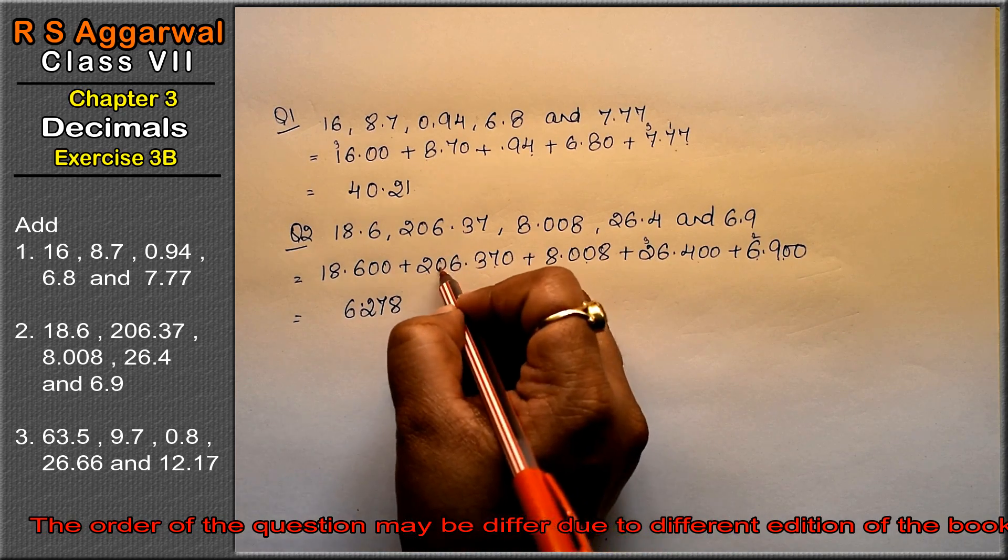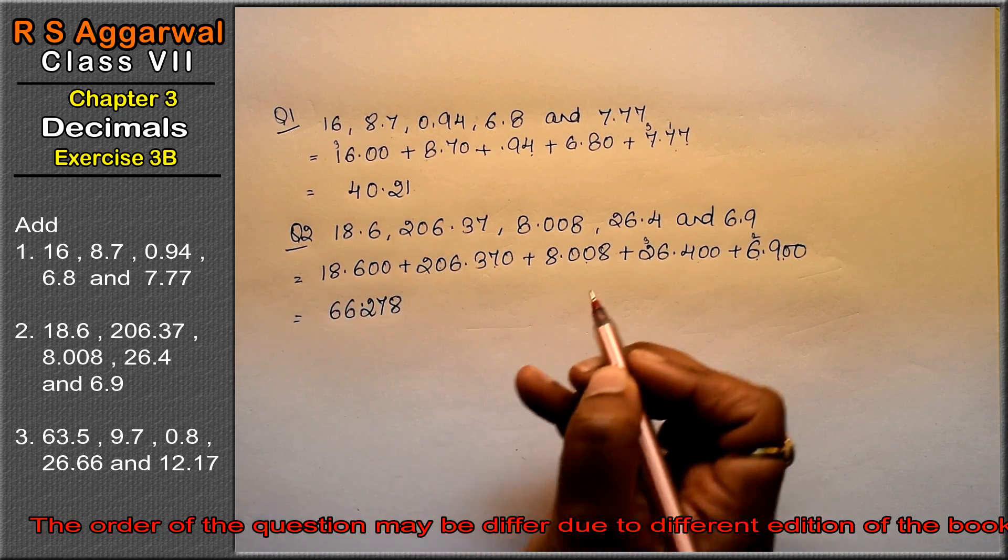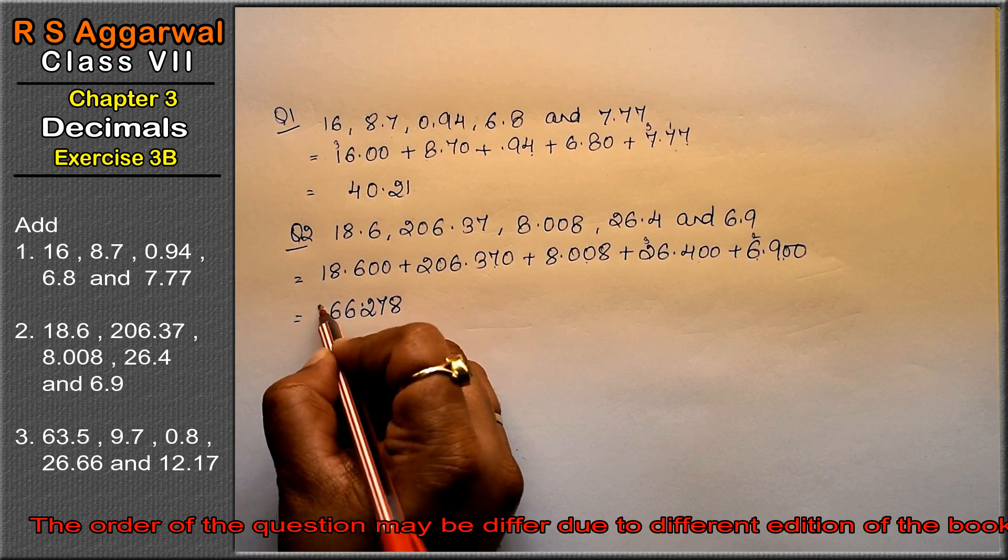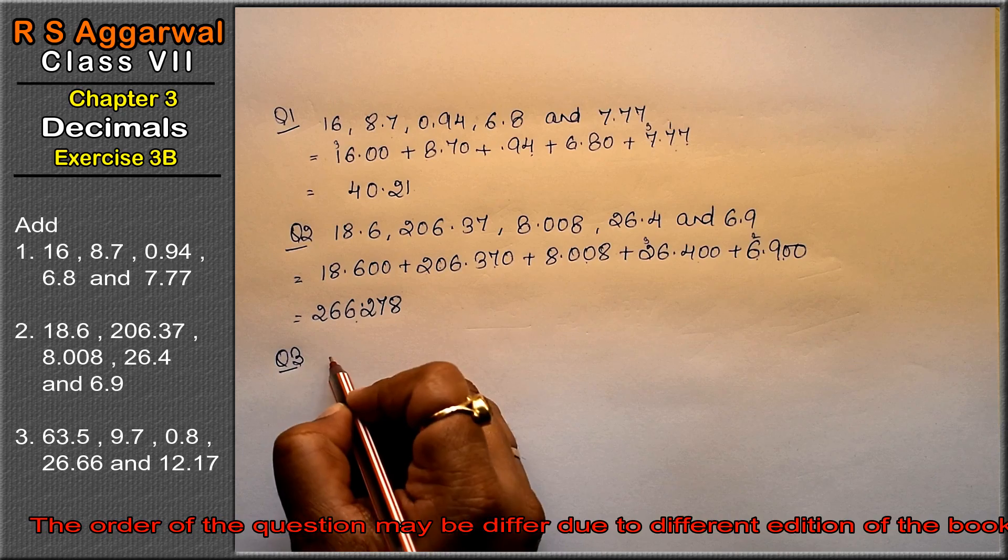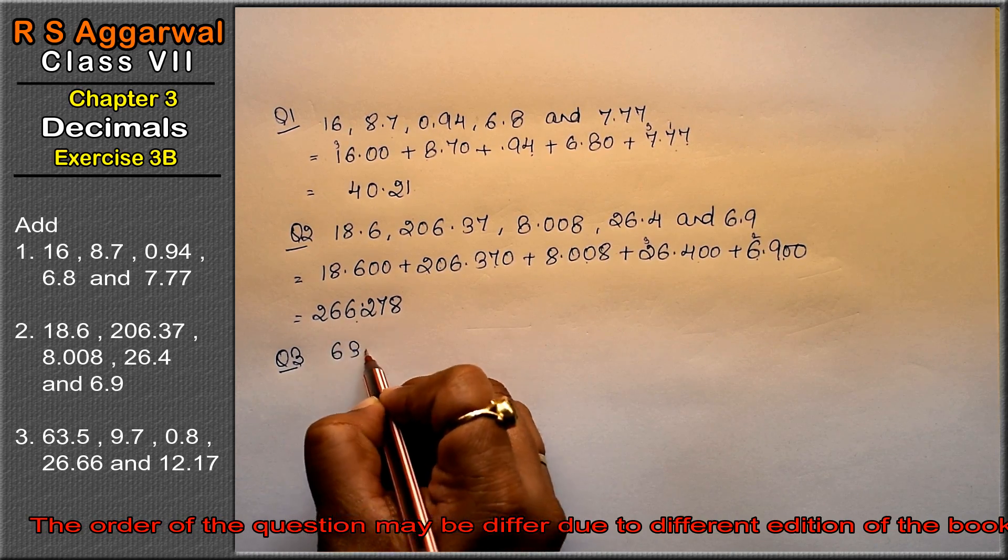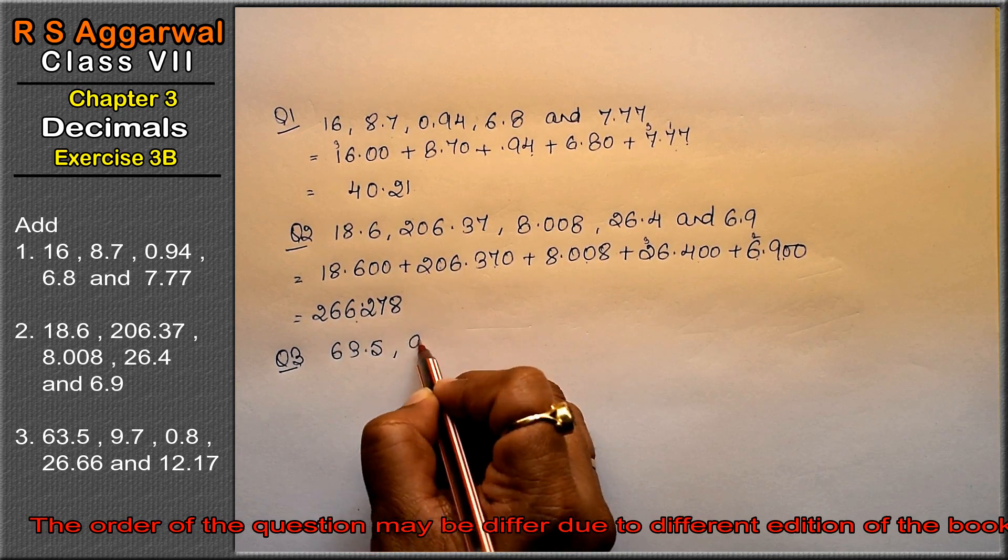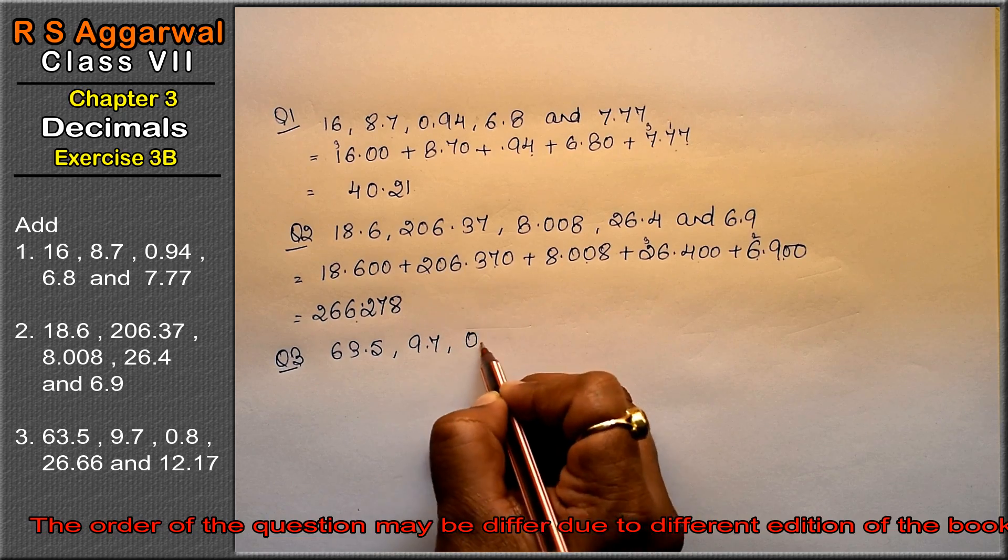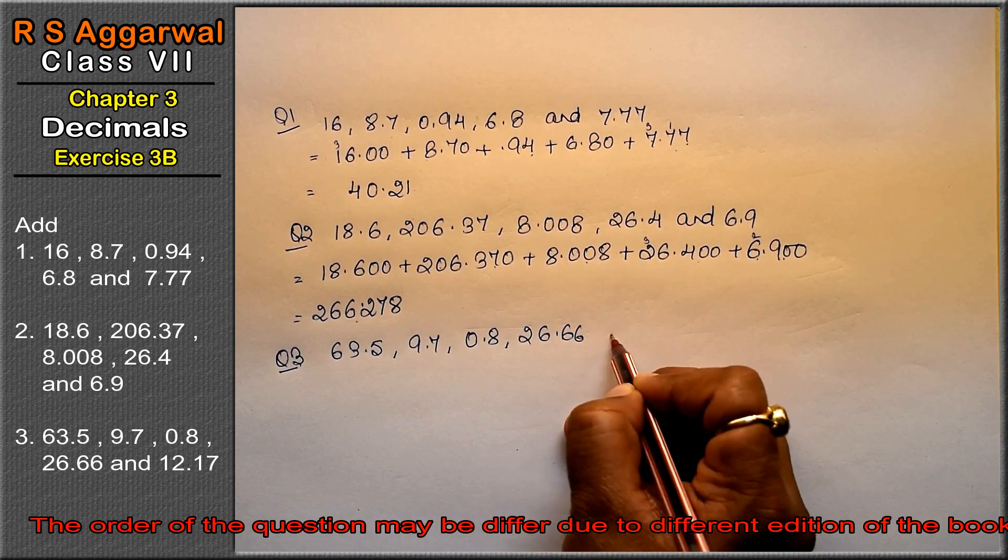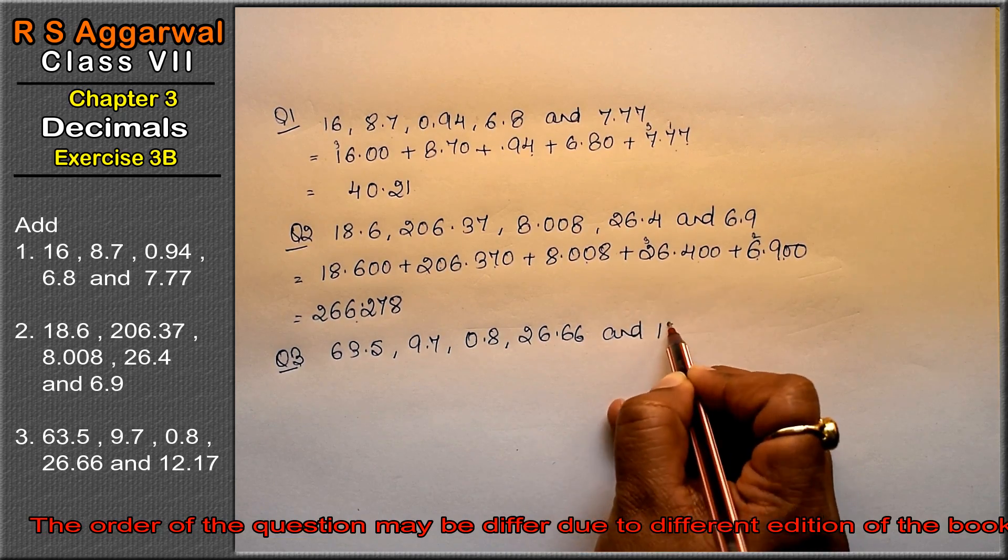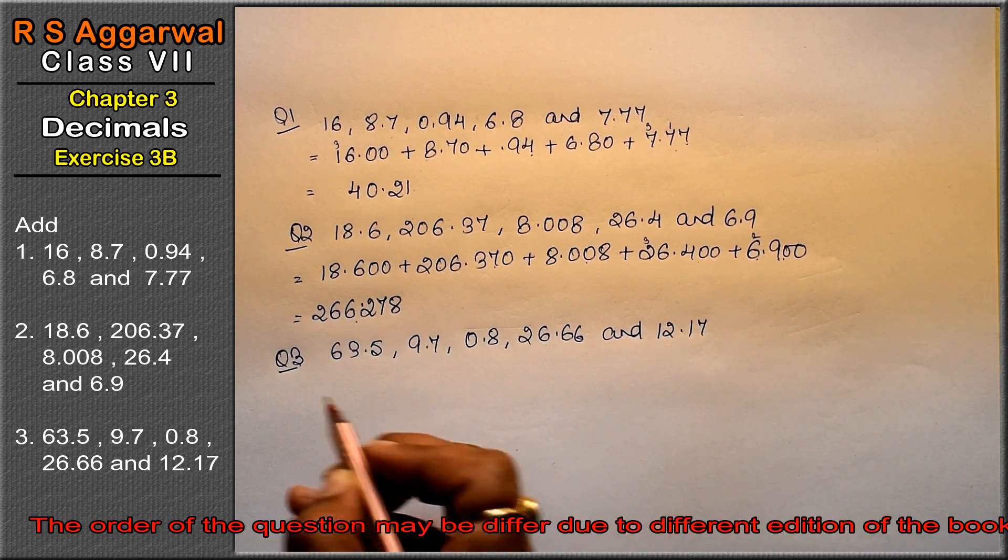5 and 6 and 2. This is the answer. Let's do question number third. Question number third is 63.5, 9.7, 0.8, 26.66 and 12.17.